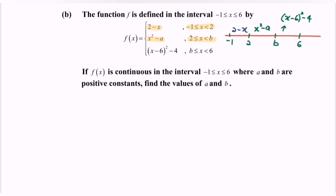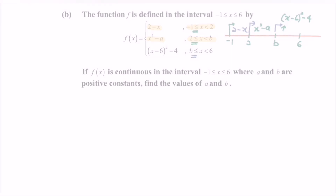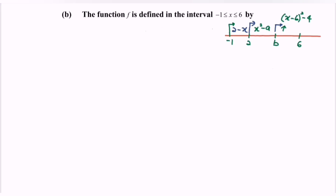Referring to the boundary points with the equal sign: at negative 1 we substitute into the function 2 minus x; at the value 2, the function is x squared minus a; and at the value b, we substitute into (x minus 6) squared minus 4. Now we begin the discussion to find a and b.